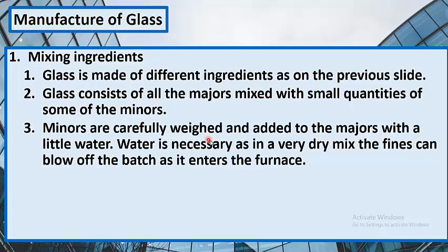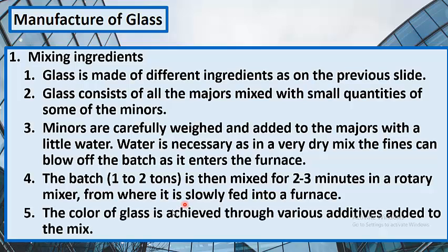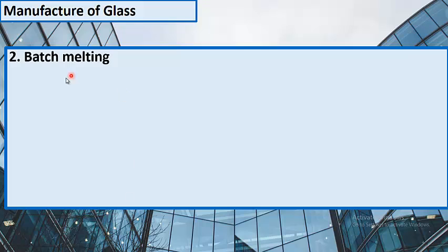The minor additives are carefully weighed and added to the main mixture with a little water. Water is necessary because in a very dry mix the fines can blow off the batch as it enters the furnace. The batch, typically one to two tons, is then mixed for two to three minutes in a rotary mixer, from where it is slowly fed into a furnace. The color of glass is achieved through various additives added to the mix.